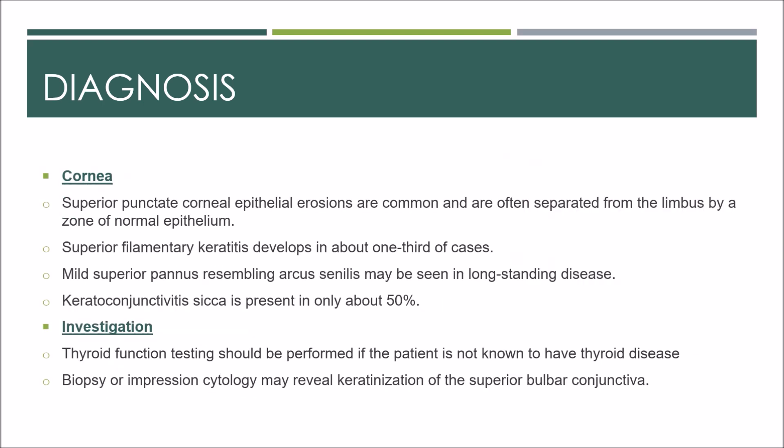On corneal examination, superior punctate corneal epithelial erosions are common and are often separated from the limbus by a zone of normal epithelium. Superior filamentary keratitis develops in about one third of cases. Mild superior pannus resembling arcus senilis may be seen in long-standing cases. Keratoconjunctivitis sicca is present in only about 50% of cases.